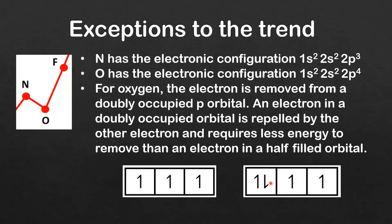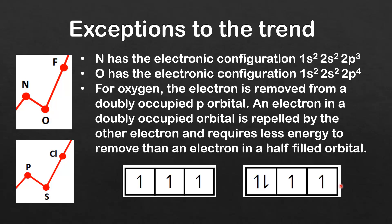This means that an electron in a doubly occupied orbital is easier to remove than one in a half-filled orbital, due to the repulsion between the two electrons occupying the same orbital.